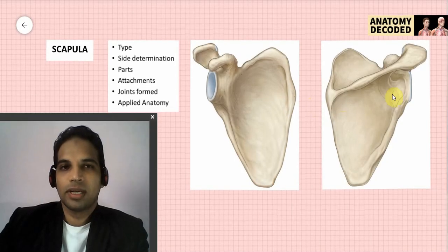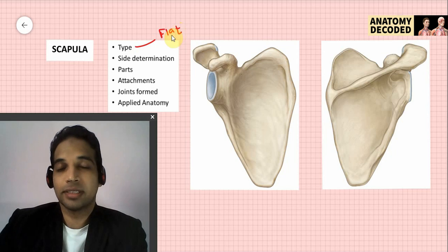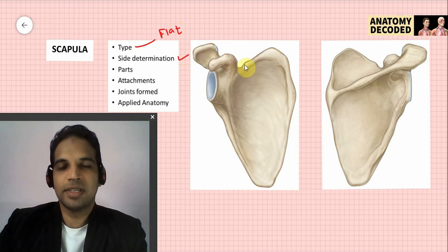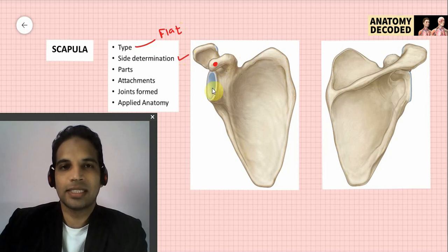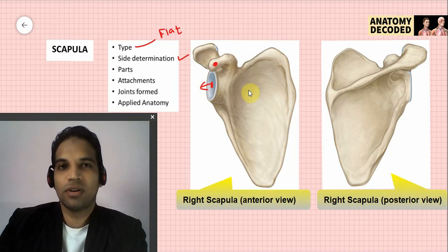The scapula is an example of a flat bone — it is flattened throughout. For side determination: the coracoid process is on the superior aspect and faces anteriorly, covering two dimensions. For medial-lateral, the glenoid cavity is facing the lateral aspect. This is the scapula of the right side viewed from the anterior aspect.